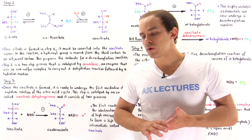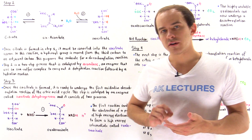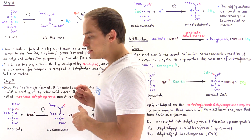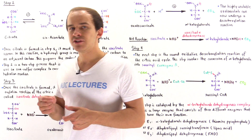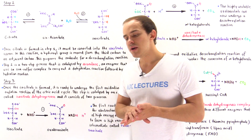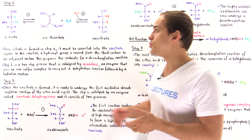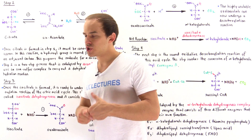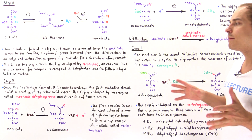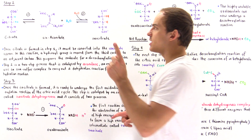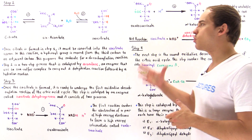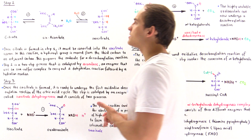In the previous lecture we focused on step one of the citric acid cycle, where we take an acetyl group and attach it onto an oxaloacetate molecule to form a six-carbon intermediate known as citrate. In this lecture, we'll focus on what happens next — steps two, three, and four of the citric acid cycle.